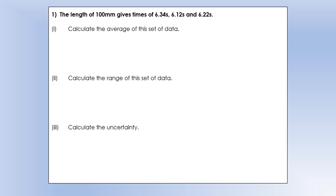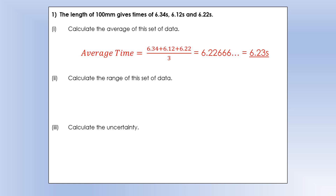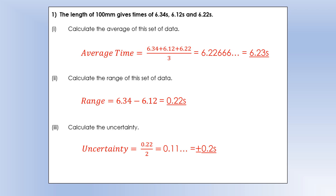Now let's do the same thing with a real experiment — a pendulum where we change the length and measure the time for 10 time periods. For a length of 100 millimeters we have three times. The average is calculated by adding the three values and dividing by 3, then rounding to two decimal places. The range is the biggest minus the smallest — which is 6.34 minus 6.12 — and the uncertainty is that range divided by 2.